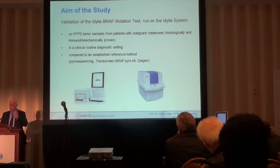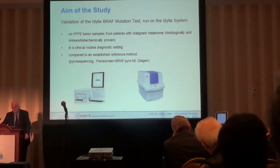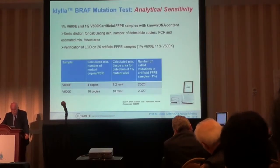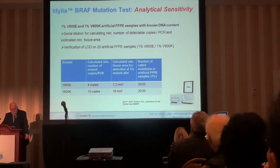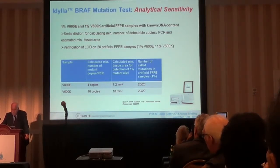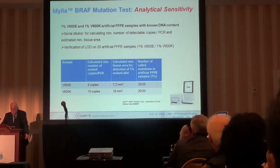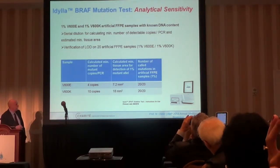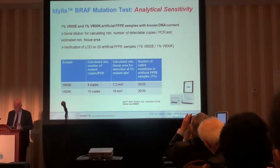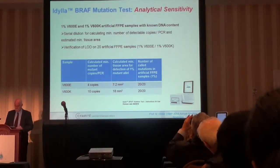The standard reference method was pyrosequencing, and in some cases we also did exoneration sequencing, which I will show you a little bit later. The analytic sensitivity — regarding the V600E and K — is very high, as shown here with the company's data. The series are used for calculating the minimum number of detectable copies, PCR, and estimated minimum tissue area, and verification of the limit of detection on 20 artificial formalin-fixed paraffin-embedded samples.